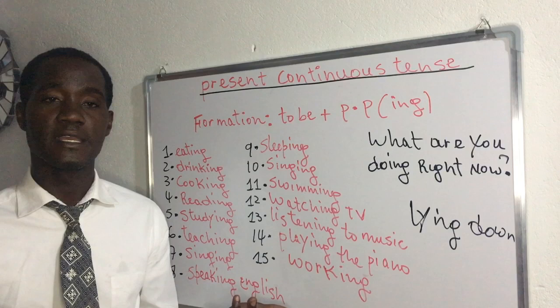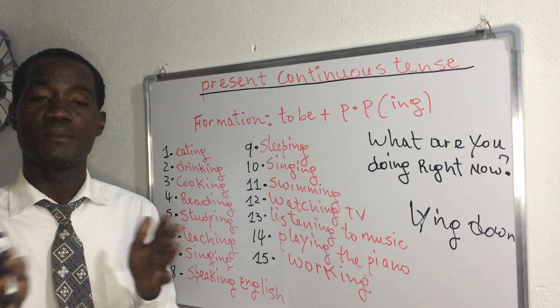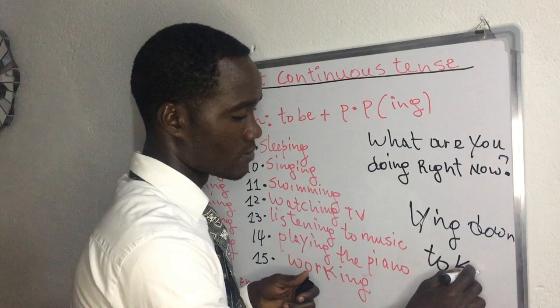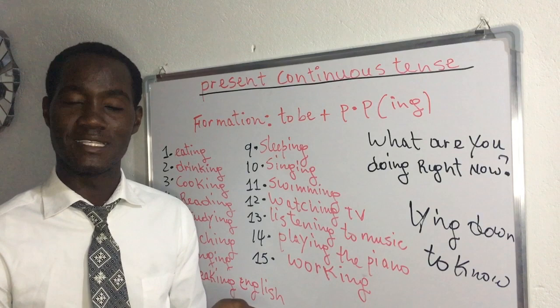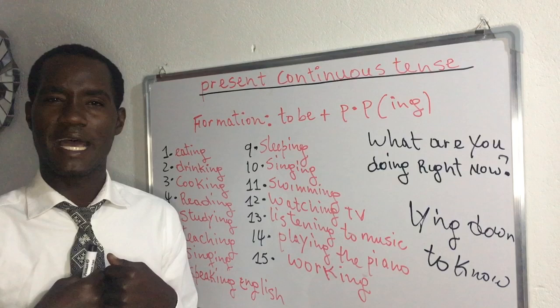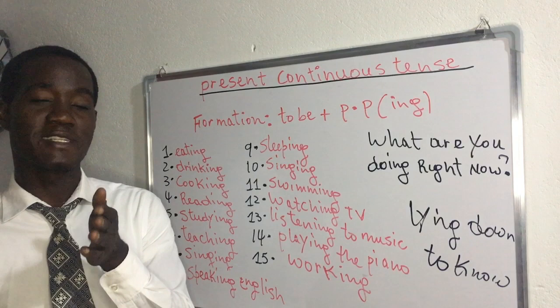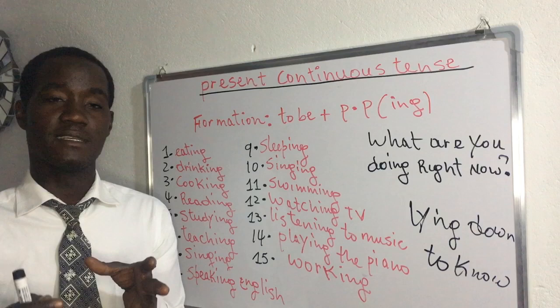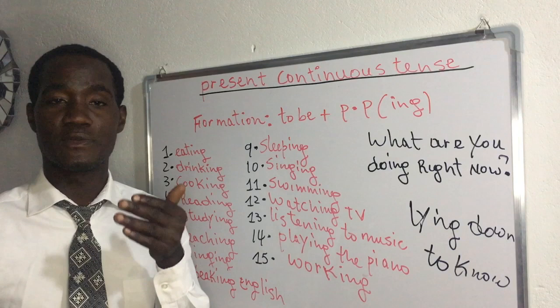We have 'work' — ki se travay. I am working. Mwen ap travay. However, there are stative verbs that you cannot add ING to in the Present Continuous. For example, 'know' — to know. You cannot say 'I am knowing.' You should say 'I know' or 'I don't know.' Similarly, 'understand' — you cannot say 'I am understanding' or 'I am not understanding.' You should say 'I understand' or 'I don't understand.' These are stative verbs.